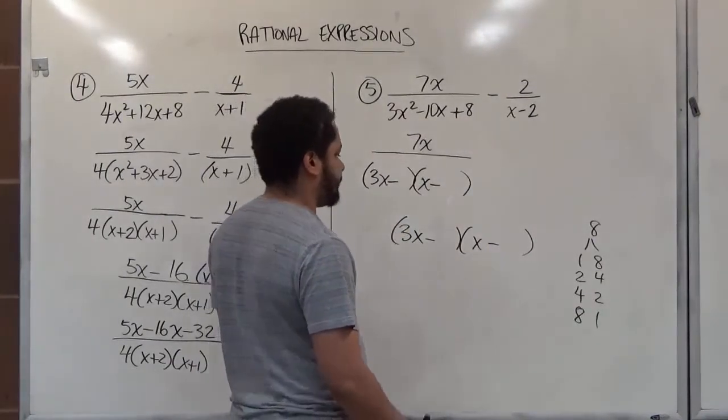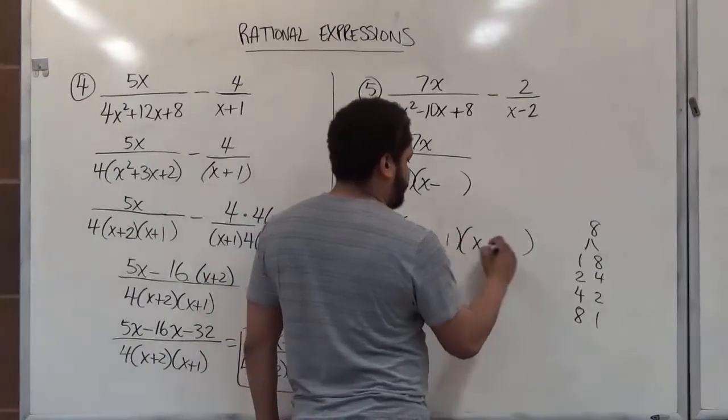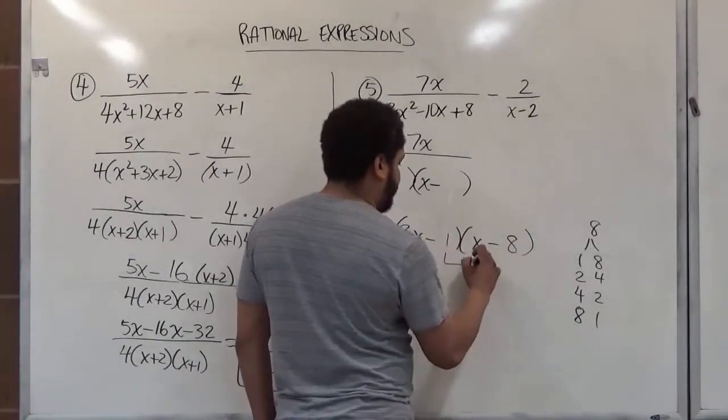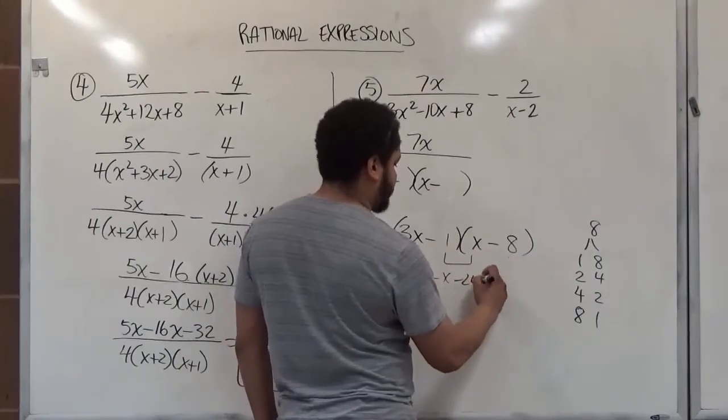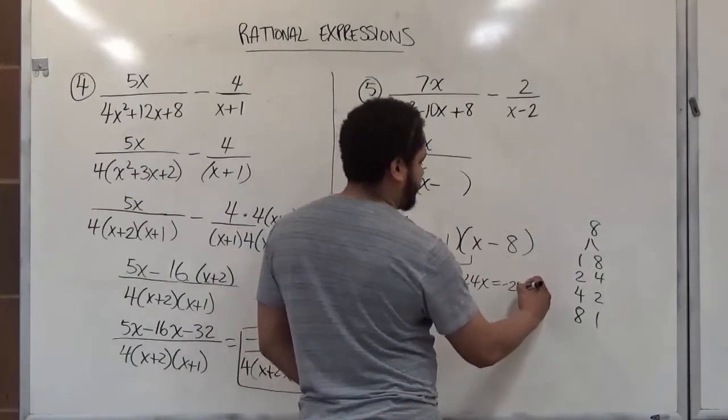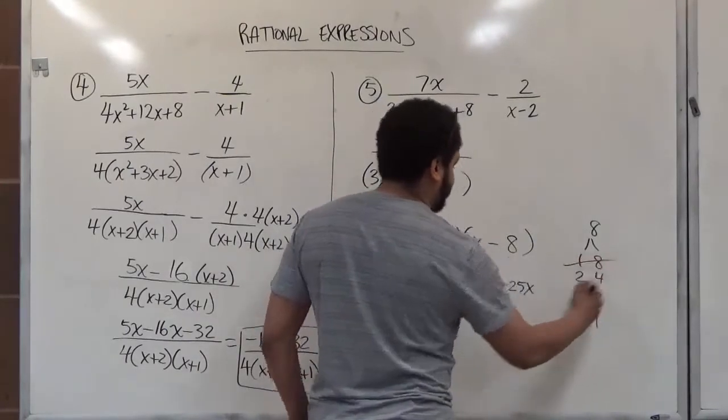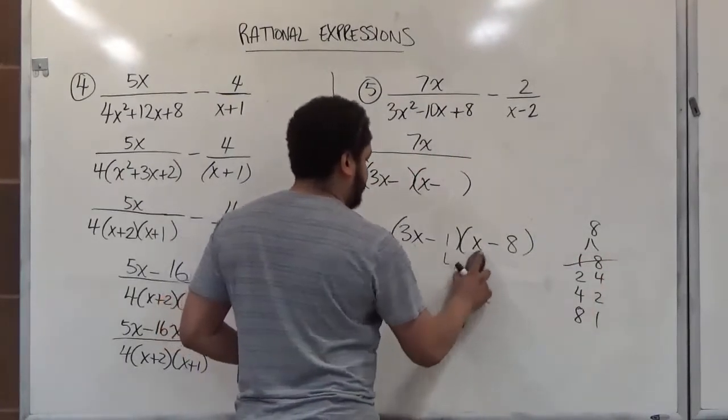So let's start with 1 and 8. 1 and 8 make negative x, and this and this make negative 24x. Way too big for us. This is negative 25x. Way too large. 1 and 8 doesn't work. Let's start over.